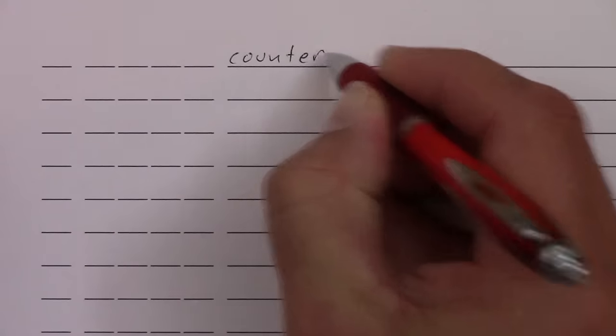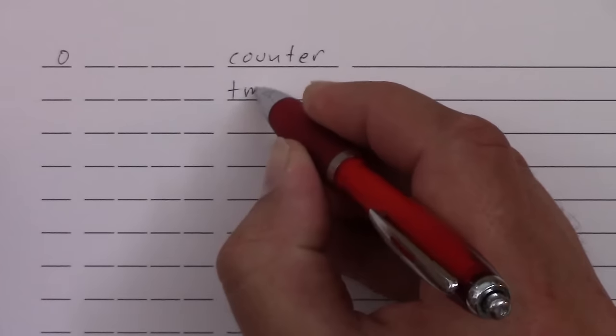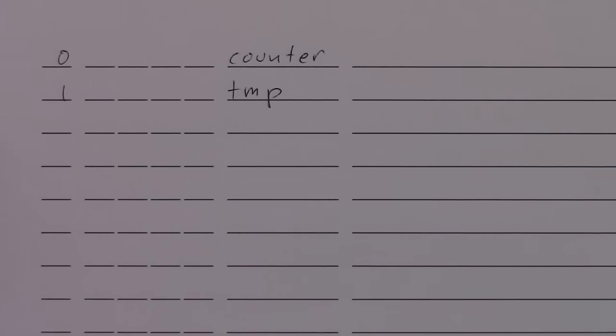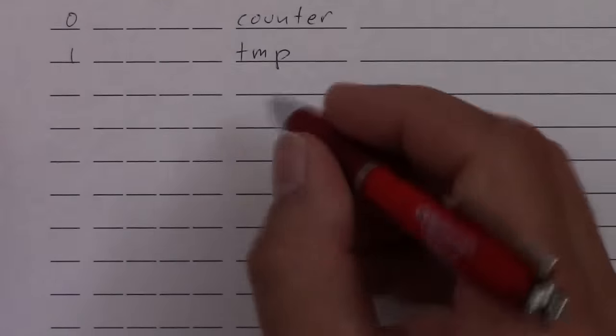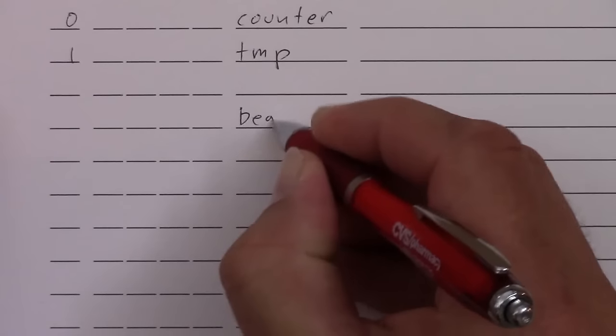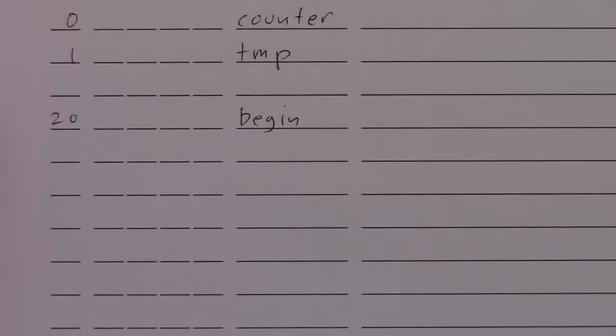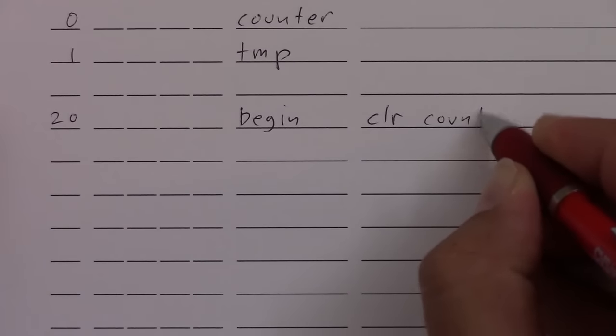So first of all, we need some variables. Let's say counter. And we'll put that at address zero. A temporary variable. We'll see why that is in a minute. Put that at address one. Now here's the start of the program. You can put it anywhere in memory you want, but let's just put it at 20. So the first thing we'll do is clear the counter.